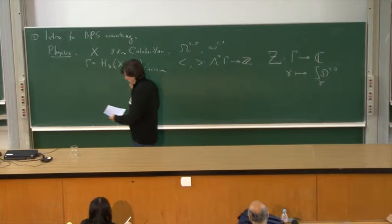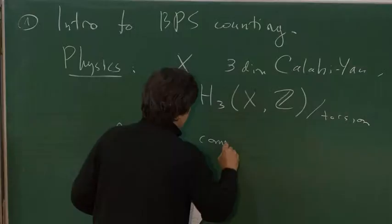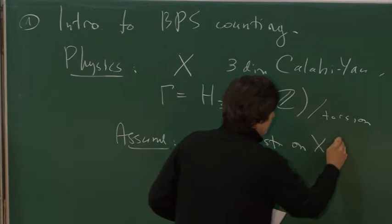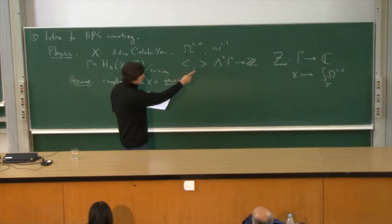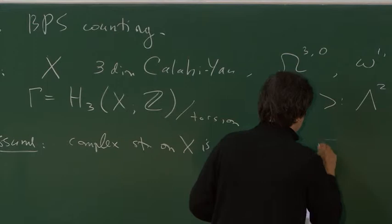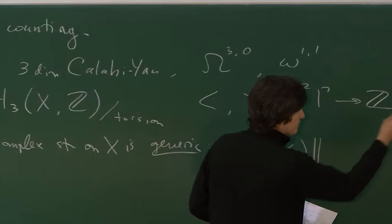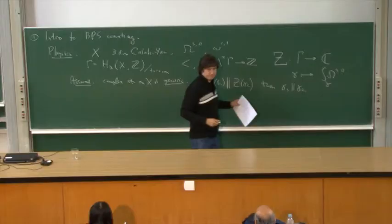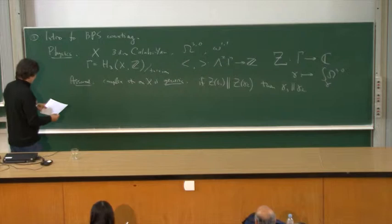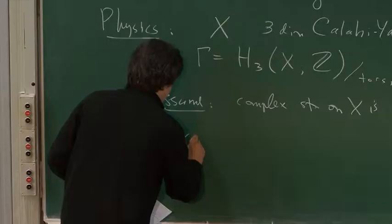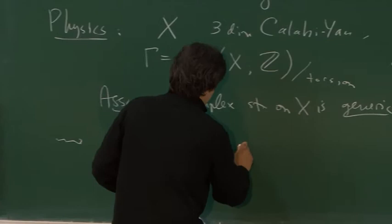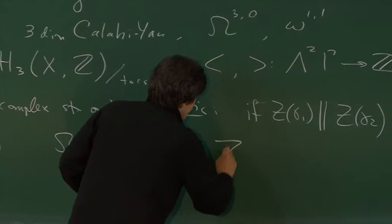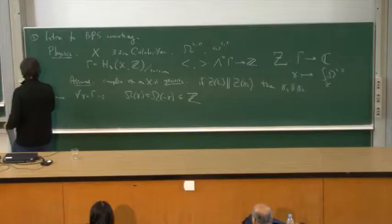Now assume that the complex structure on X is generic enough, meaning this map Z has the following property: if two vectors and corresponding complex numbers are parallel as vectors in R2, then gamma one should be parallel to gamma two in the lattice. For generic complex structure this will be the case. The claim is that in such situation one gets remarkable integer numbers omega gamma which are even functions with values in integers.